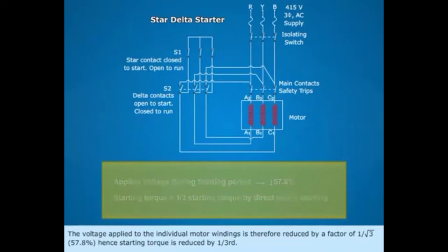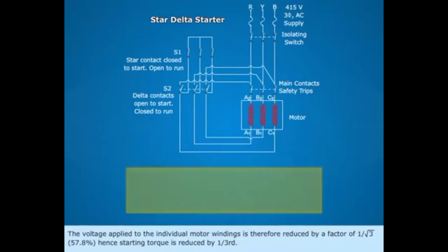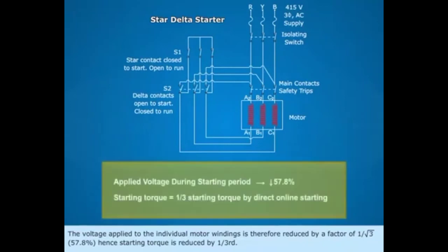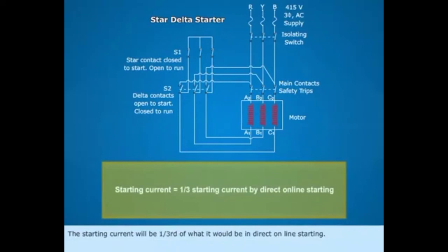Hence, starting torque is reduced by 1 by 3rd. The starting current will be 1 by 3rd of what it would be in direct online starting.